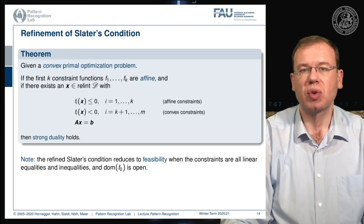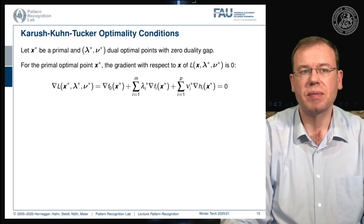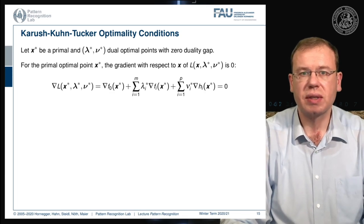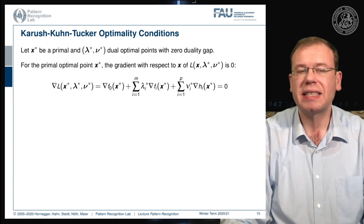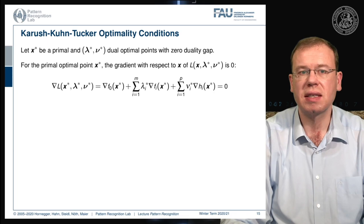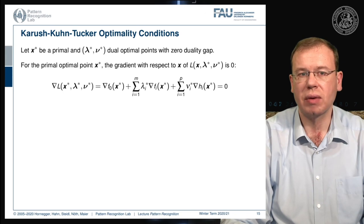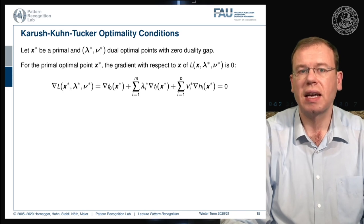This brings us to the Karush-Kuhn-Tucker (KKT) optimality conditions. Let x* be the optimal solution for the primal, and lambda* and nu* be the optimal points of the dual problem with zero duality gap. The KKT conditions are essentially related to the condition that the gradient of the Lagrangian with respect to x is zero — that is, the gradient of f0 at x* plus the gradient of the inequalities plus the gradient of the equality constraints equals zero.